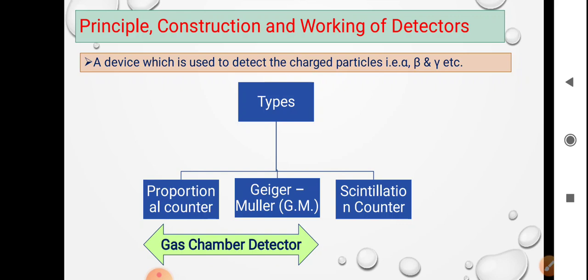There are three types of detectors or counters. First one is the proportional counter, second one is the Geiger-Muller counter, and third one is the scintillation counter. These two counters—proportional and GM—are collectively known as gas chamber detectors. Now it's time to discuss only the scintillation counter.